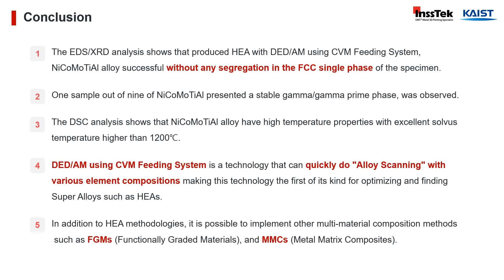In conclusion, the results of this study can be summarized as follows. The EDS and XRD analysis shows that the produced high-entropy alloys with DED-AM using the CVM feeding system — the nickel, cobalt, molybden, titanium, aluminum alloys — were successful without any segregation of the FCC single phase of the specimen. One sample out of nine presented a stable gamma, gamma-prime phase. The DSC analysis shows that the alloy has high-temperature properties with excellent solvus temperature higher than 1,200 Celsius degrees. Direct energy deposition additive manufacturing technologies using the CVM feeding system can quickly perform alloy scanning with various element compositions, making this technology the first of its kind for optimizing and finding super alloys such as high-entropy alloys.